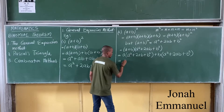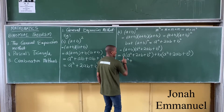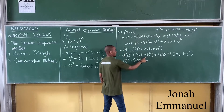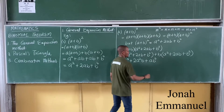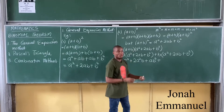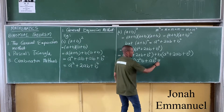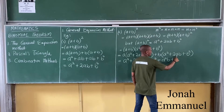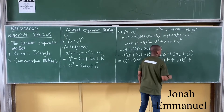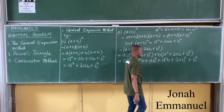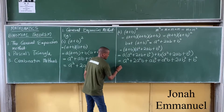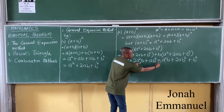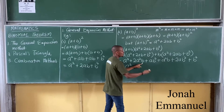Expanding: a times a squared gives a cubed, plus a times 2ab gives 2a squared b, plus a times b squared gives ab squared. Then b times a squared gives a squared b (arranged in alphabetical order), plus b times 2ab gives 2ab squared, plus b times b squared gives b cubed. Note that a squared b is not the same as ab squared — in one term a is squared and b is power 1; in the other, a is power 1 and b is squared.